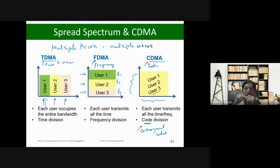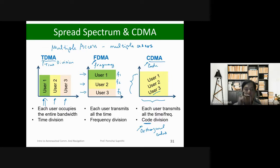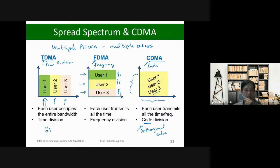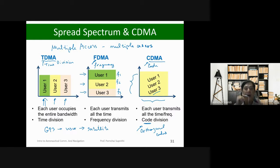For GPS there are 32 satellites, and each satellite has its own orthogonal code, so we need 32 codes for transmission. Each satellite transmits its own code to anyone in the world. As mobile users or GPS receivers, we need to know all the codes in order to extract the signal from each satellite. In GPS, the 'user' in this picture is the satellite — all satellites transmit simultaneously across the entire spectrum using different codes.